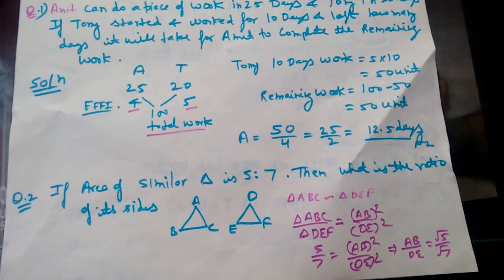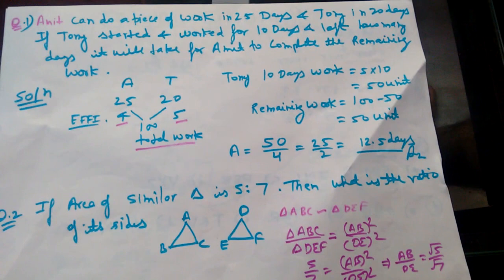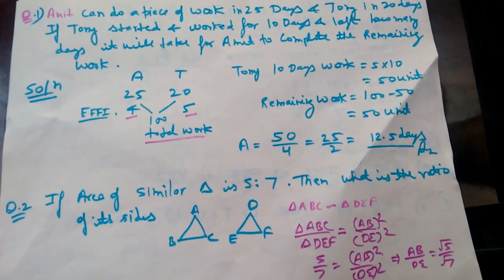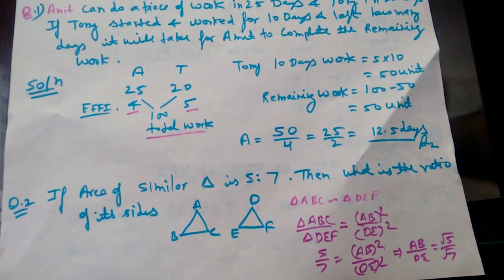Now the 3-4 questions will be focused on your work in the shift. Amit can do a piece of work in 25 days and Tony in 20 days. If Tony started and worked for 10 days and left,